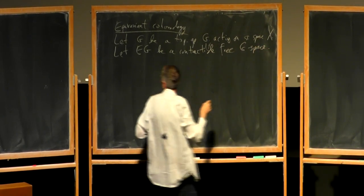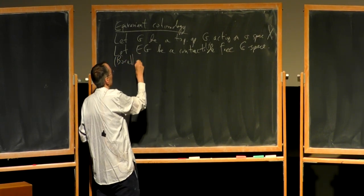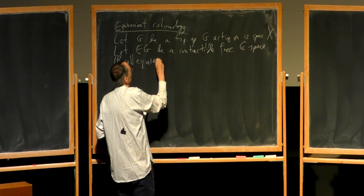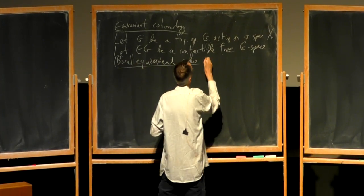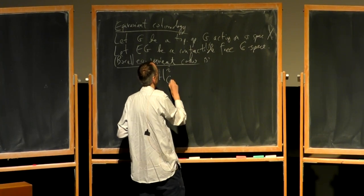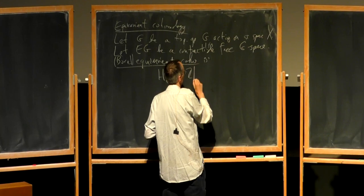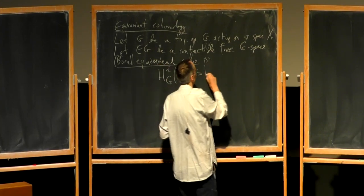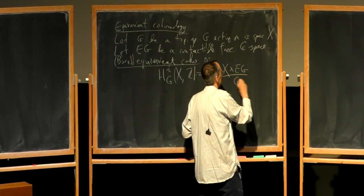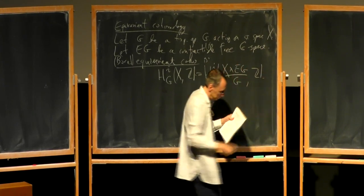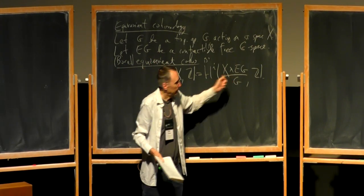Then equivariant cohomology, or Borel equivariant cohomology — there are different versions — is defined as follows: you define H^i_G of X, with integer coefficients or whatever, to mean you take the cohomology of X times this contractible space, modulo the action of G. In other words, equivariant cohomology is just the cohomology of an associated space.